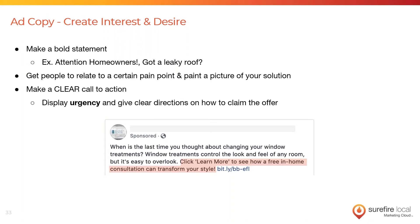To get attention, you need to call out who your ideal prospect is — this will get them to stop scrolling and continue reading your ad. For example: 'Attention homeowners' or 'Got a leaky roof?' Anything that calls out to who they are. Next, get them interested by relating to a pain point, then create desire for your solution by showing them a picture of what they could get with you — your creative image or video is really going to paint the picture for them. The final step is a clear call to action that displays urgency and guides them to take action — you can literally say 'click the button below to claim the offer.'